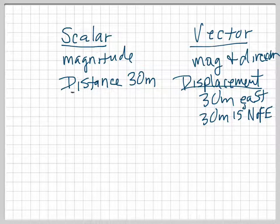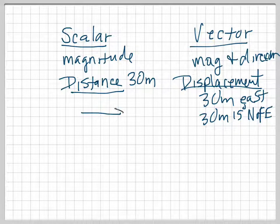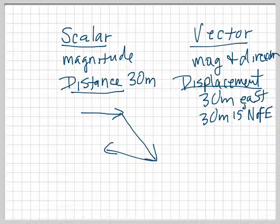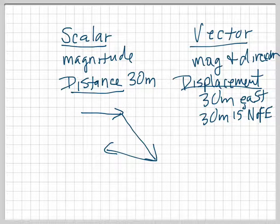So displacement and distance are different things. If I were to walk this far, then this far, then over here, I would add all these up and that would be my distance traveled. But my displacement would just be from where I started to where I ended. This is my displacement.